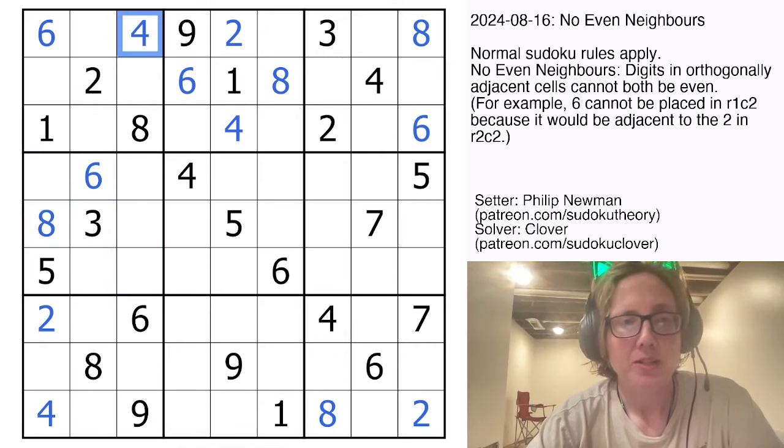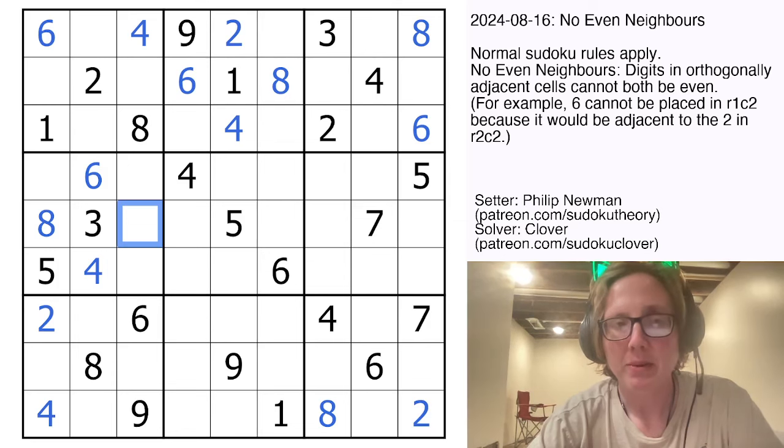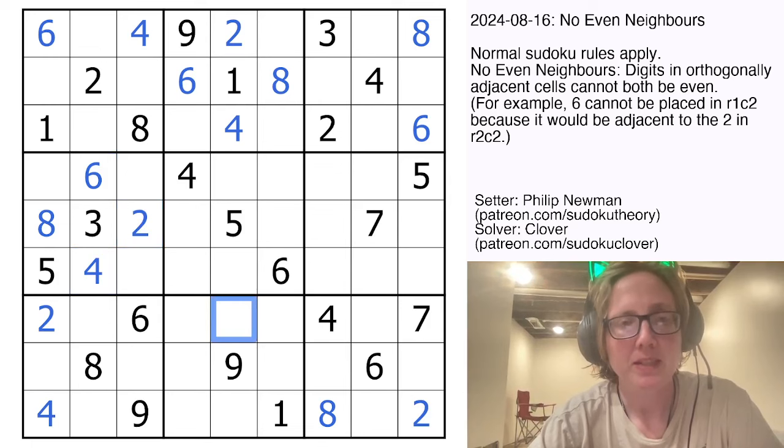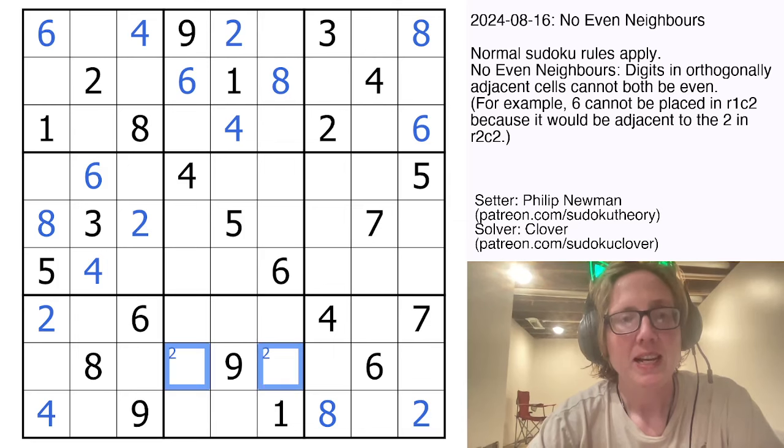4 can't go in these cells just by Sudoku, so it's going to go here. And then the last position where we can put a 2 without putting it next to the 4 or the 6 is going to be right there. Now continuing counterclockwise, 2 has to go in one of these cells. 8 has to go in one of these cells by Sudoku.